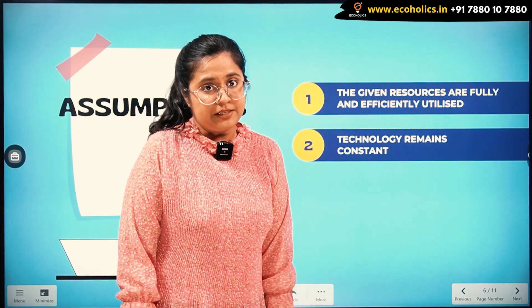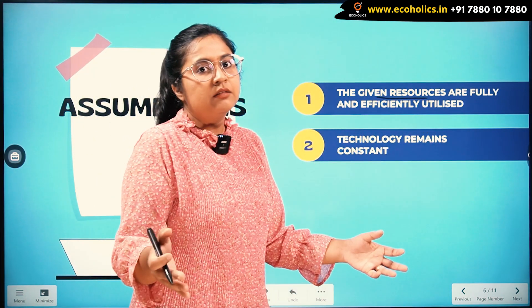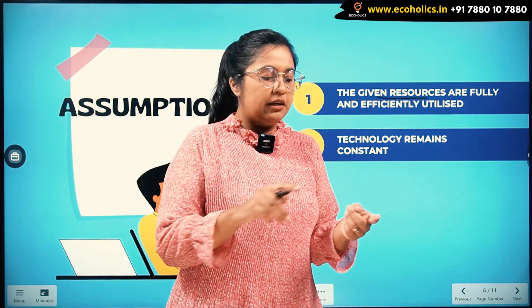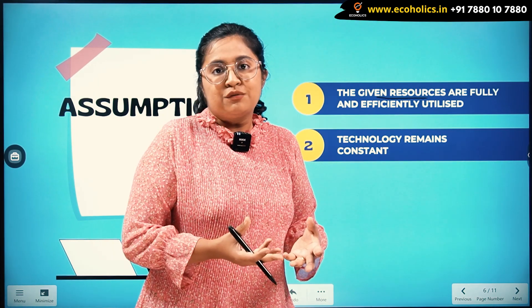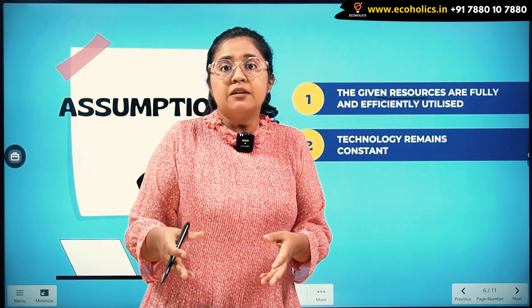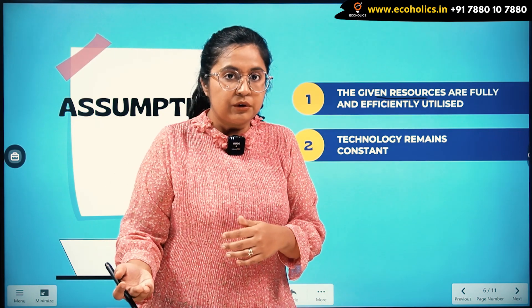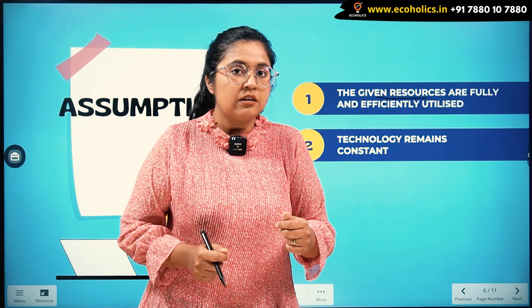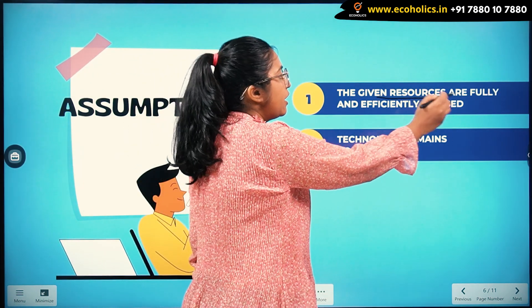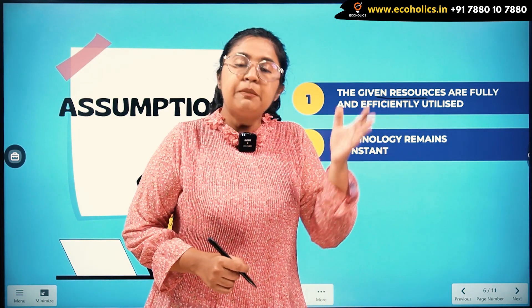Now let's talk about the assumptions of PPC. There are two simple assumptions. The first assumption is that the given resources available in the economy — which can be raw materials, minerals, water, electricity, agricultural resources like climate or land, or industrial resources used to convert raw material into finished goods — are fully and efficiently utilized.